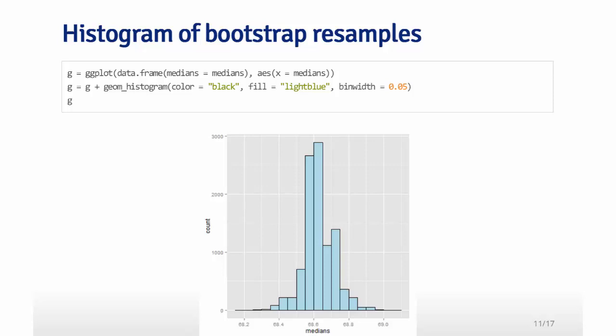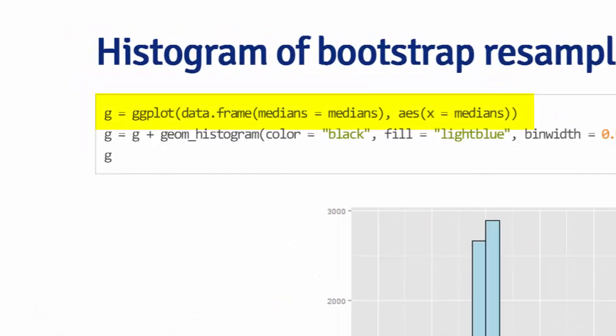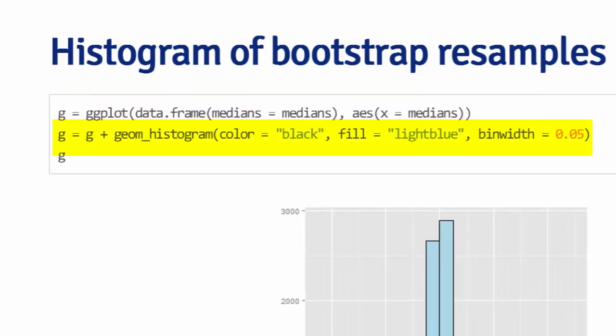Here's my histogram of Bootstrap resamples, and this is just always a good thing to do. I did it with ggplot, and so here you see me assigning g the output of the ggplot function. ggplot works on data frames, so I define a data frame as my collection of medians. And then my aesthetic, my x variable, is the medians. Then I'm going to add to my plot a layer that is a histogram. The black means the bars, the outside of the bars are black. Fill being light blue means the inside of the bars I wanted to be light blue. And bin width talks about the width of the bins to create my histogram. Then I type g to actually show the plot.